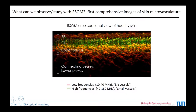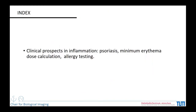From now to the end of the talk, the colour code I will use is: red for low frequencies meaning big vessels, and green for high frequencies meaning small vessels. Now let's go to the clinical prospects in inflammation. We will talk about psoriasis, minimum erythema dose calculation, and allergy testing — these are the things we have been studying lately in my group.